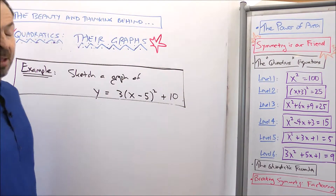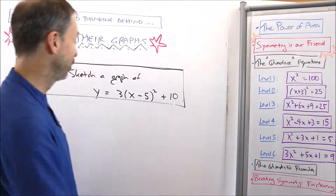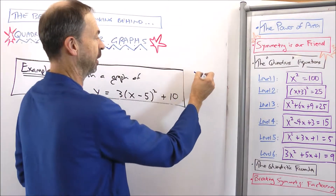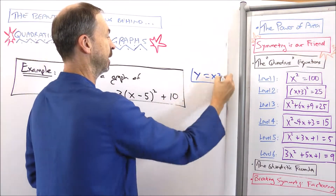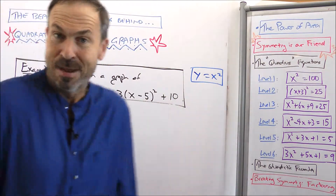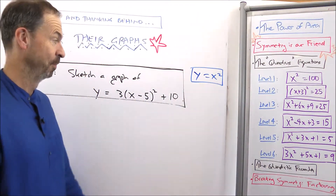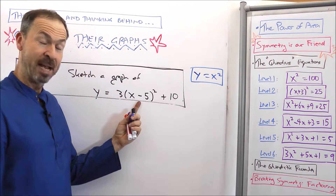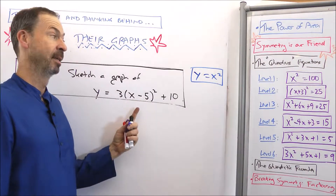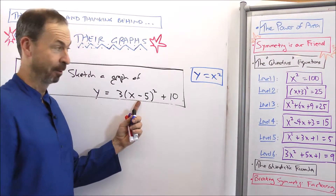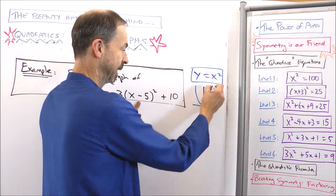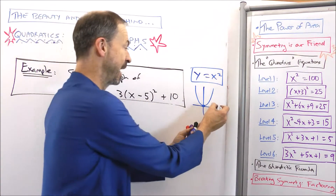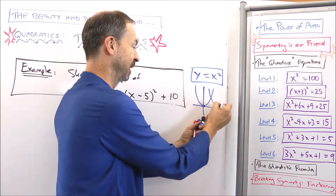Here's how my brain works. I see it's really just 3 times something squared plus 10. In fact, it's basically just the formula y equals x squared that's been modified. I can see they've made the number 5 behave like 0 — when I put in x equals 5, I get 0 squared. So 5 is behaving like 0. Normally 0 is the vertex, but now 5 is behaving like the vertex.